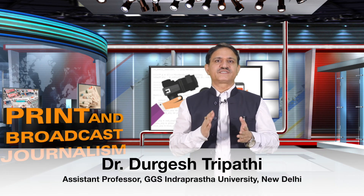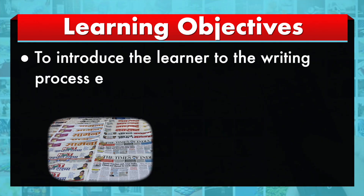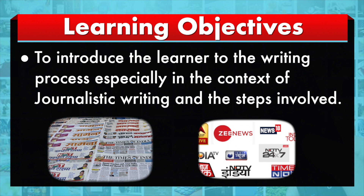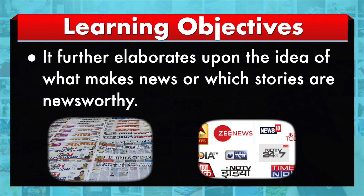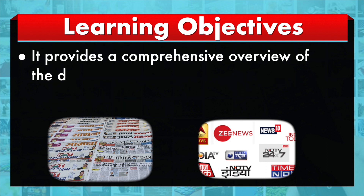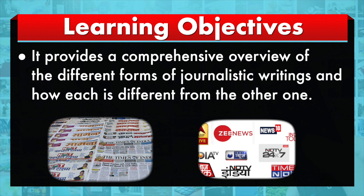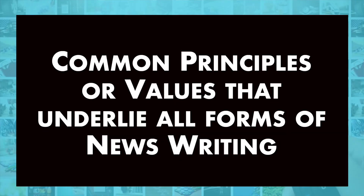Dear Learner, today we will discuss the very important topic of different forms of journalistic writing. The learning outcome of the module is to introduce you to the writing process, specially in the context of journalistic writing and the steps involved. It further elaborates upon the idea of what makes news or which stories are newsworthy, and provides a comprehensive overview of the different forms of journalistic writings and how each is different from the other. Let us discuss common principles or values that underlie all forms of news writing.